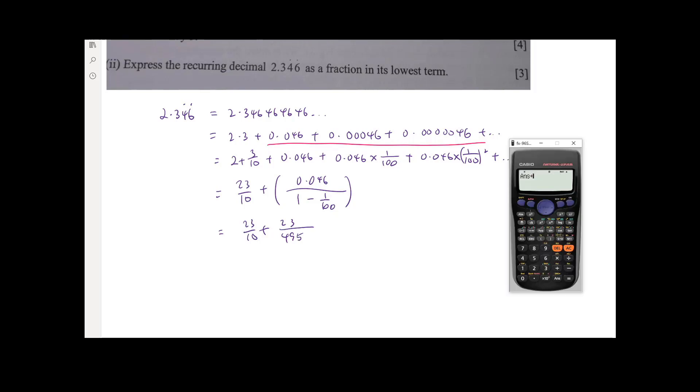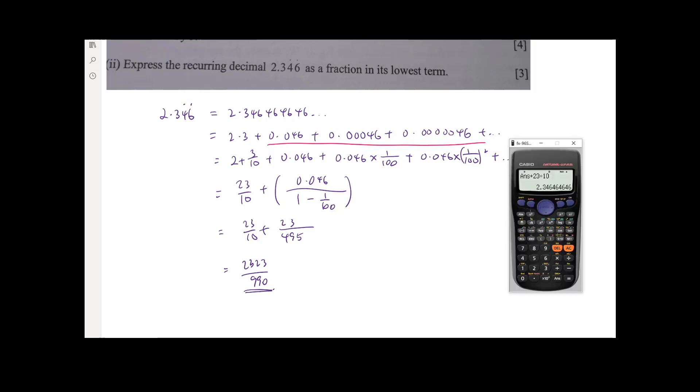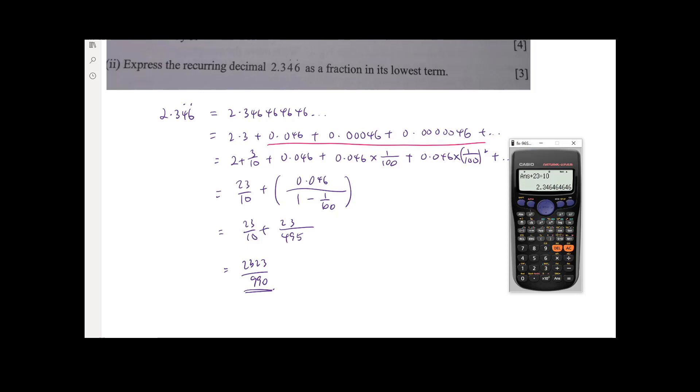So, there you go. That's the 23 over 495. Then this nonsense of a number plus 23 over 10. 23 over 990. This idea of a recurring decimal, because it is something infinity after all, right? So as long as you can make it into an infinity series, then that will be awesome, actually.